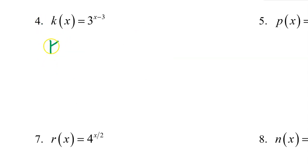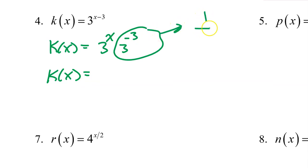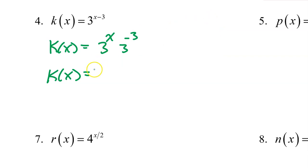Number 4: k of x can be rewritten as 3 to the x power times 3 to the negative 3 power. 3 to the negative 3 is the same thing as 1 over 3 to the 3rd power, which is 1 over 27. Putting that in front, we have 1 over 27 times 3 to the x power.